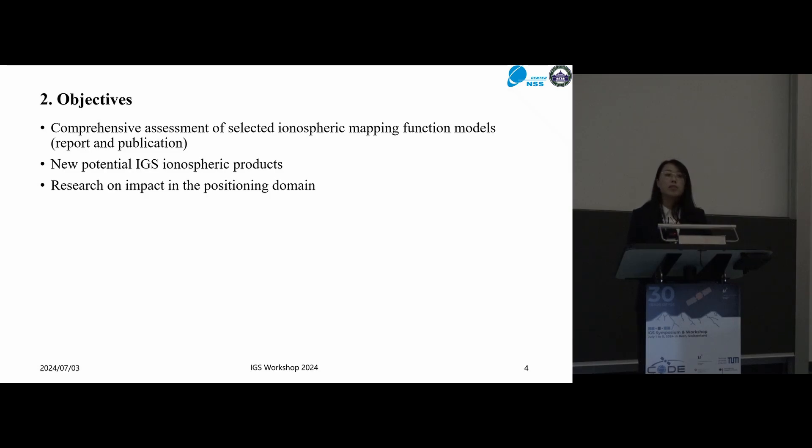The objectives include, first, the comprehensive assessment of selected ionospheric mapping function models in order to provide useful statistics to GNSS users. And second, our goal is to provide new potential IGS ionospheric products. Lastly, we would like to examine the impact of the ionospheric mapping function models on the positioning performance.